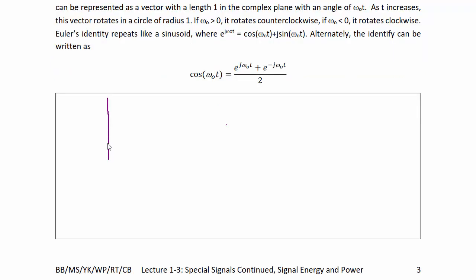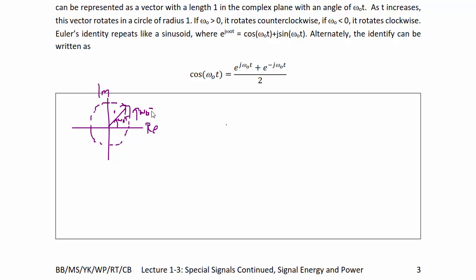Here we have a sketch of e^(jω₀t) in the complex plane, where the vertical axis is the imaginary axis and the horizontal axis is the real axis. It's a vector, just like you saw in your AC circuits course and circuits and systems course. As it rotates, it traces out the unit circle, so this has a magnitude of one. It rotates at ω₀t, going counterclockwise if ω₀ > 0, and clockwise if ω₀ < 0.